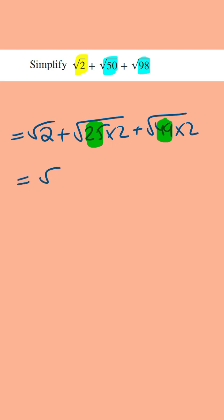And so you can rewrite this as the square root of 2 plus the square root of 25 is 5 and we bring it outside and so this is 5 root 2 and then we've got plus the square root of 49 is 7 and we bring it outside and so this is 7 root 2.